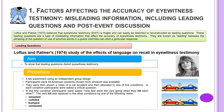Loftus and Palmer's 1974 study of the effects of language on recall in eyewitness testimony. The aim: to show that leading questions distort eyewitness testimony. Procedure: a lab experiment using an independent group design. Participants were 45 American students chosen from whoever was available. They were shown a video of a car accident and then allocated to one of five conditions. In each condition participants were asked a critical question. In the first condition they were asked how fast the cars were going when they hit each other. The verb 'hit' was replaced in each other condition by: smashed, collided, bumped, or contacted.